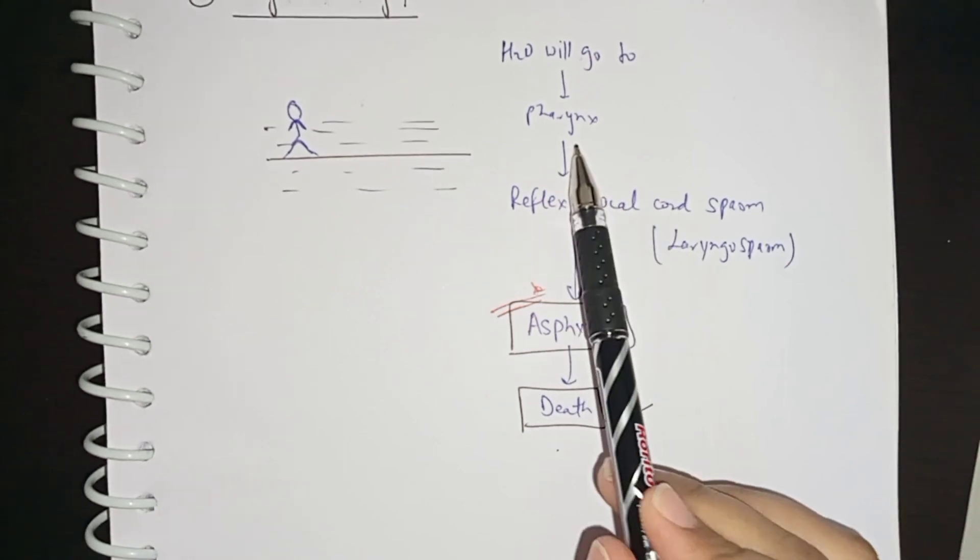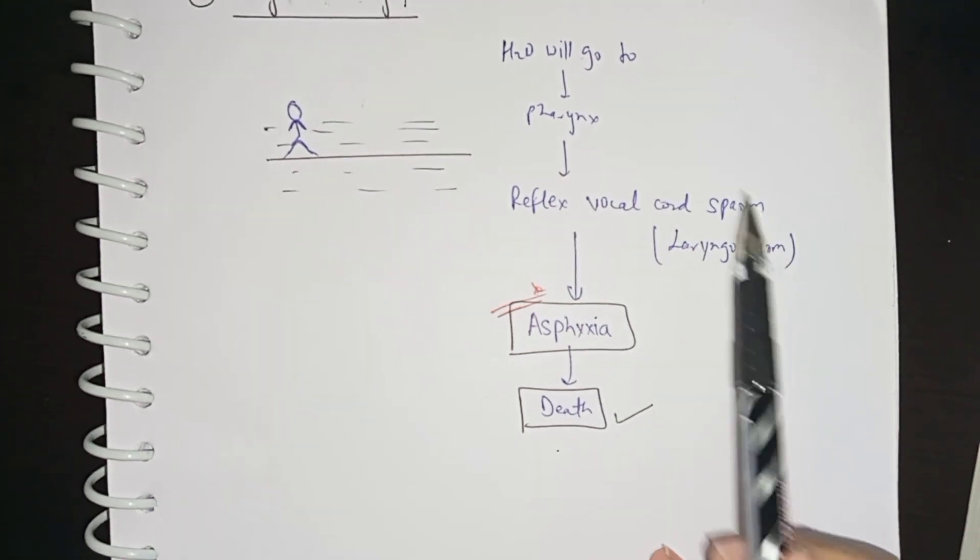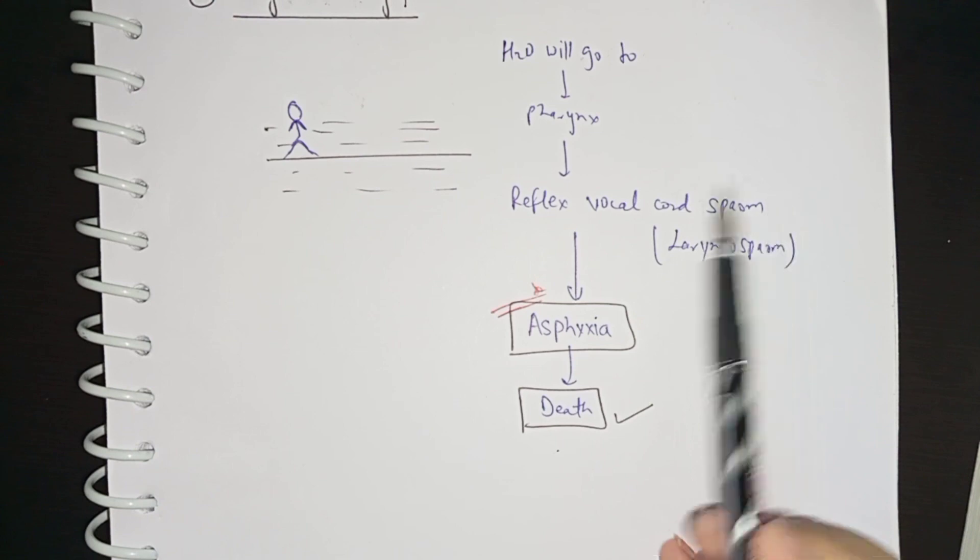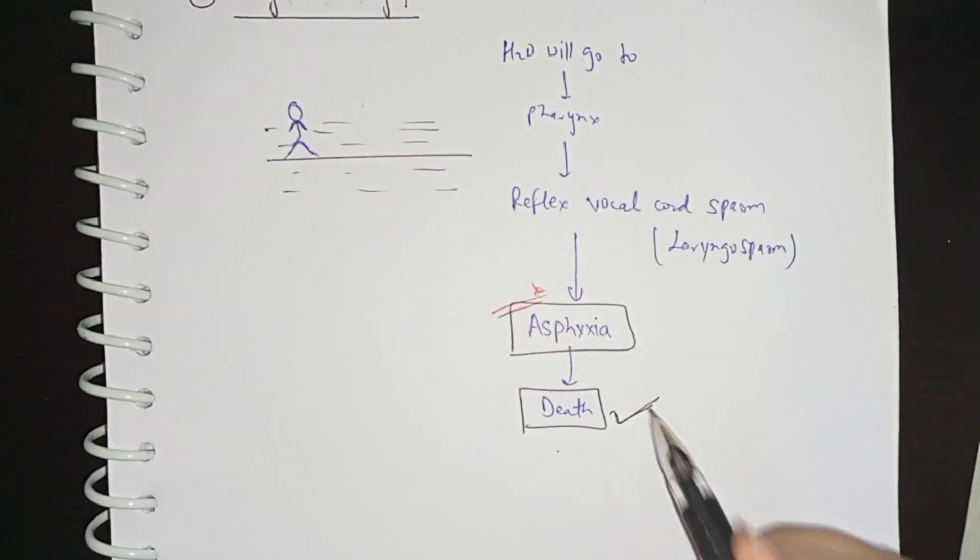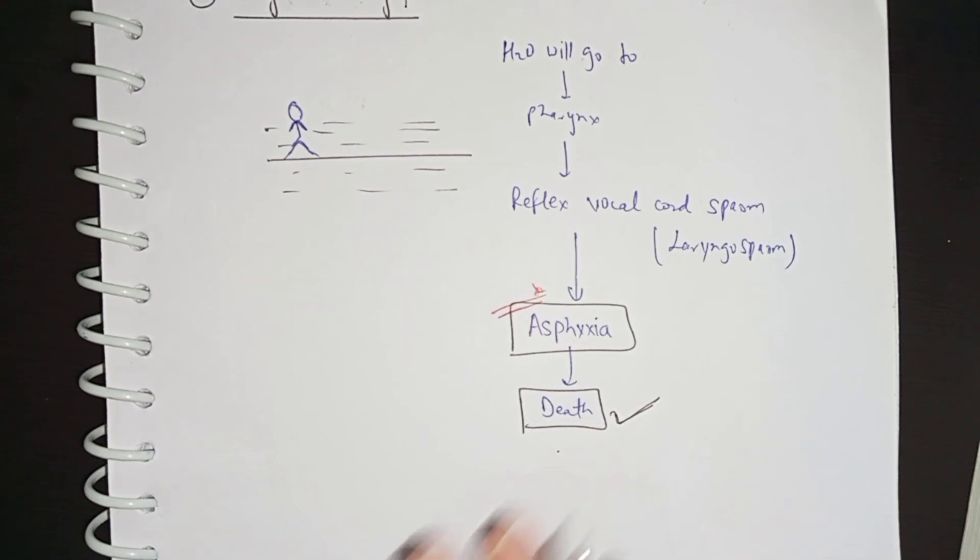What will happen in the pharynx? The larynx will have spasms. What will spasms cause? Asphyxia will cause your death. This is the cause of dry drowning death.